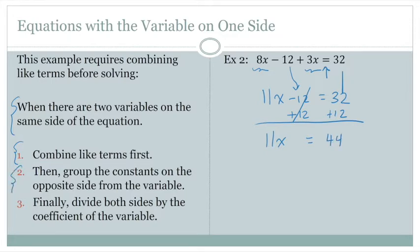So we group the constants on the opposite side from the variable, and then we finish by dividing both sides by the coefficient of the variable. And that leaves us with x equal to 4.